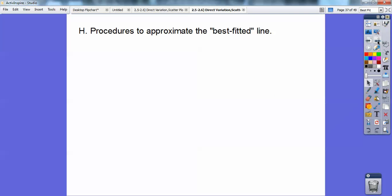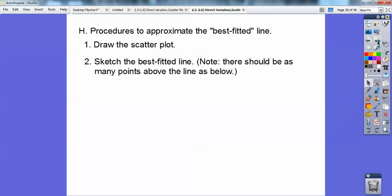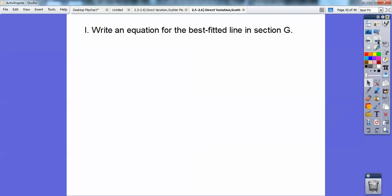So procedures to approximate your best fitted line. Draw the scatter plot and then sketch the best fitted line that fits all those points. And there should be as many points above the line as below the line. And then choose two points on the line that fits the data. Then write an equation. So then write an equation when you pick those two points and we know how to write equations.